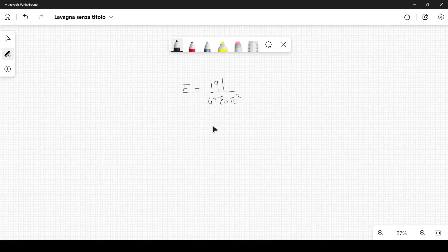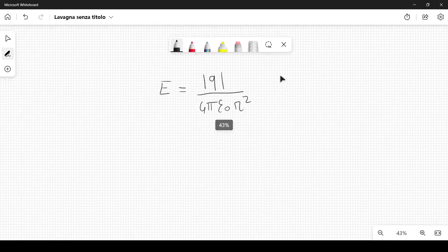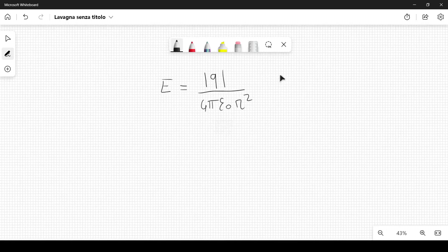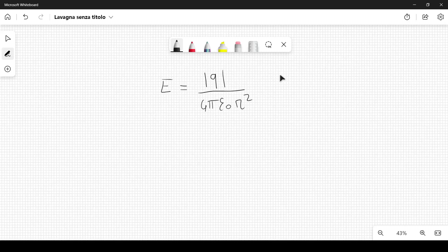Here we have the absolute value because I'm considering the magnitude of the electric field produced by the charge. Epsilon 0 is the vacuum permittivity, and R is the distance between the point at which we calculate the electric field and the center of the particle, which we assume to be a sphere with the radius Re.